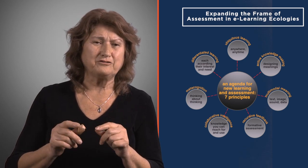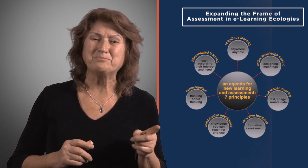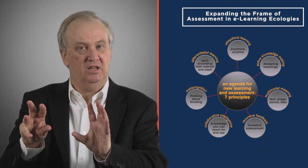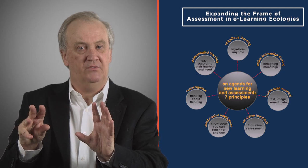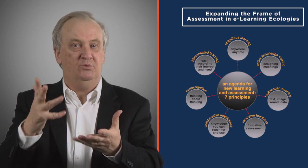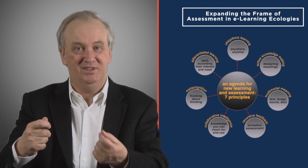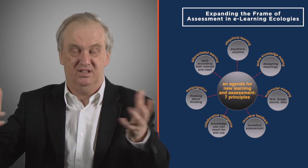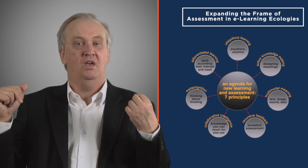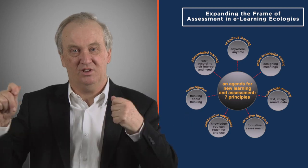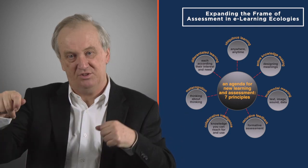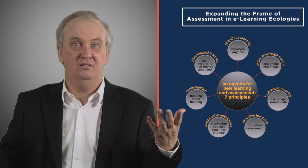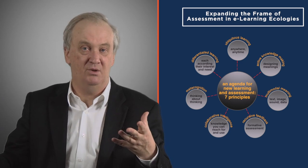Bill will now take these seven affordances and expand on the assessment potential of each one. Starting with ubiquitous learning: whereas assessment used to have to happen at a fixed time — say, between 9 and 12 on a specific Friday — with everyone in a closed room, unable to talk, with proctors and all that. Now we can probably build assessments where we assess what you're doing whether you're in the room or not, at whatever time you are.